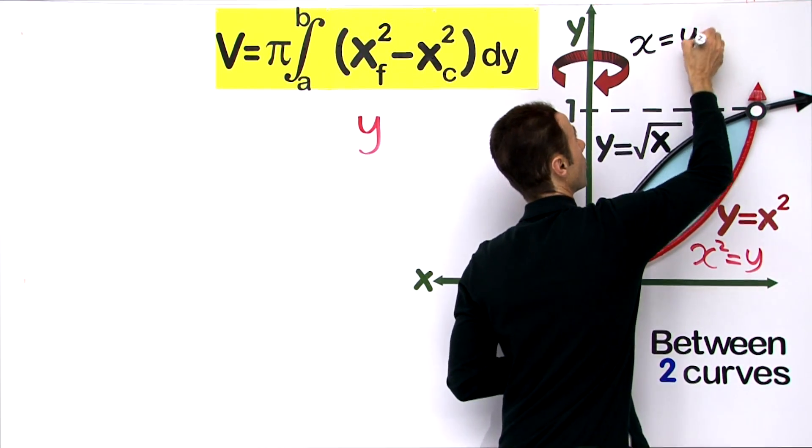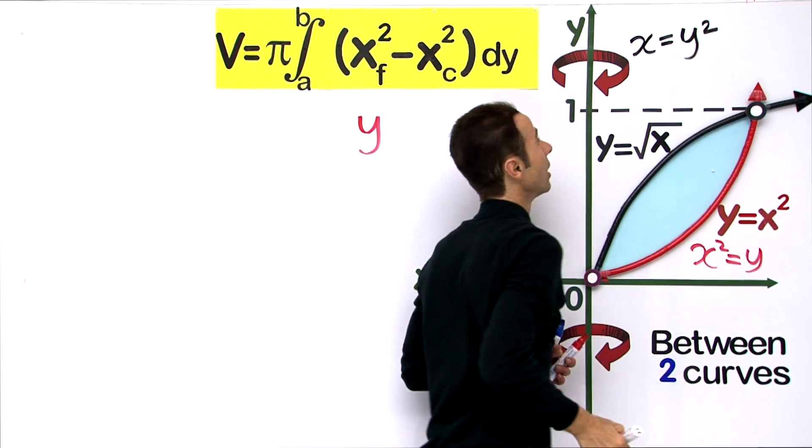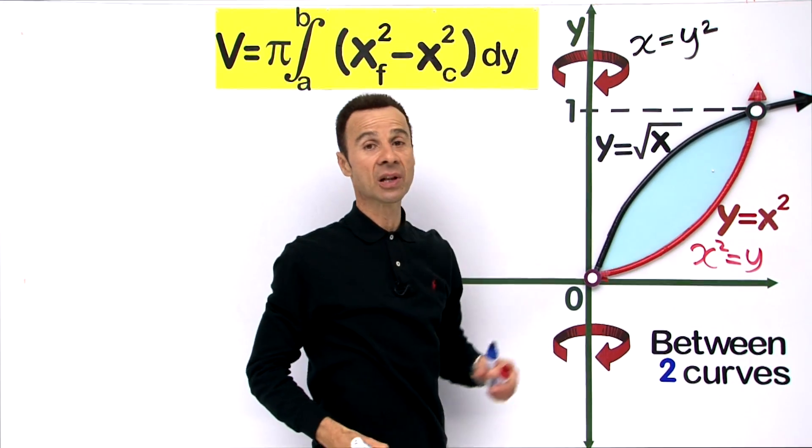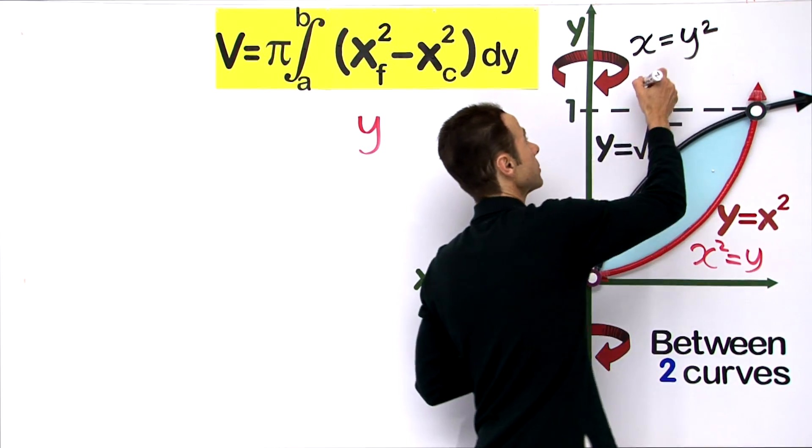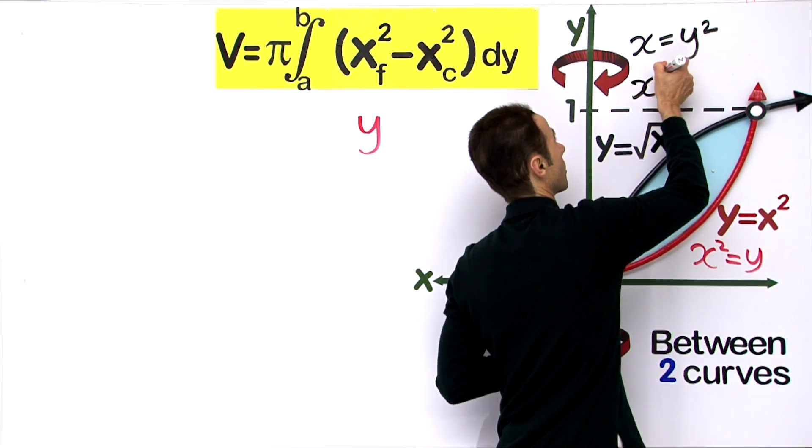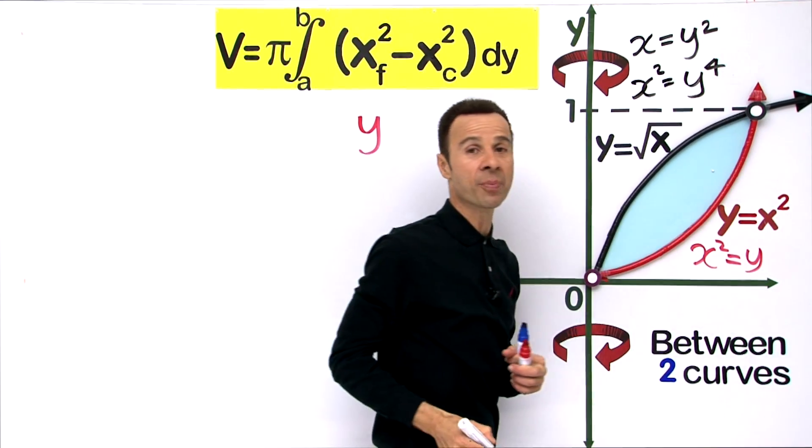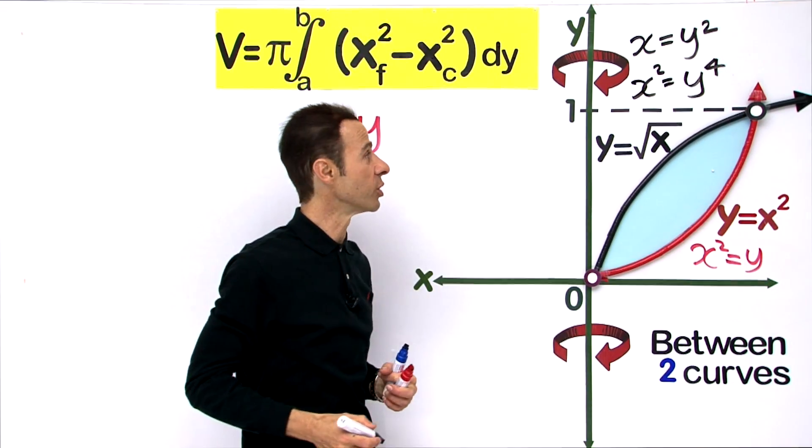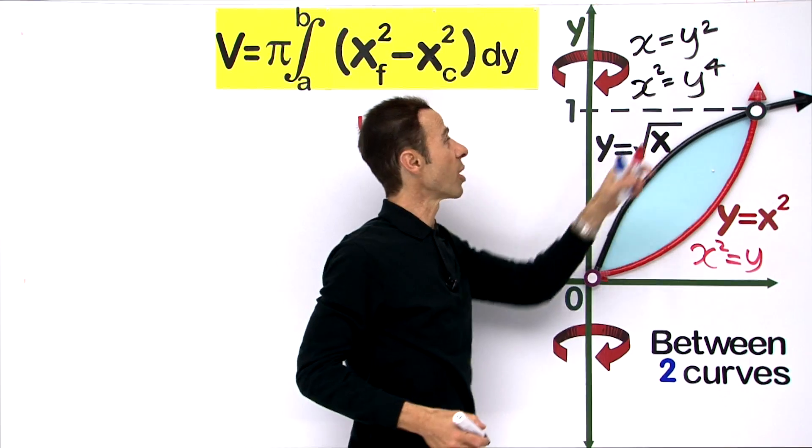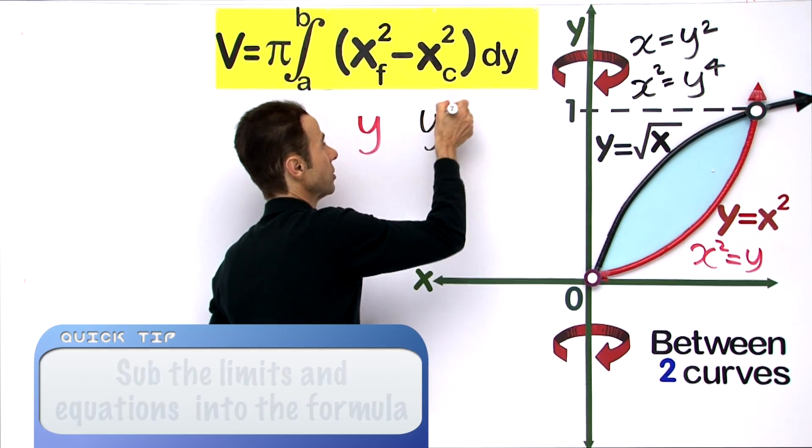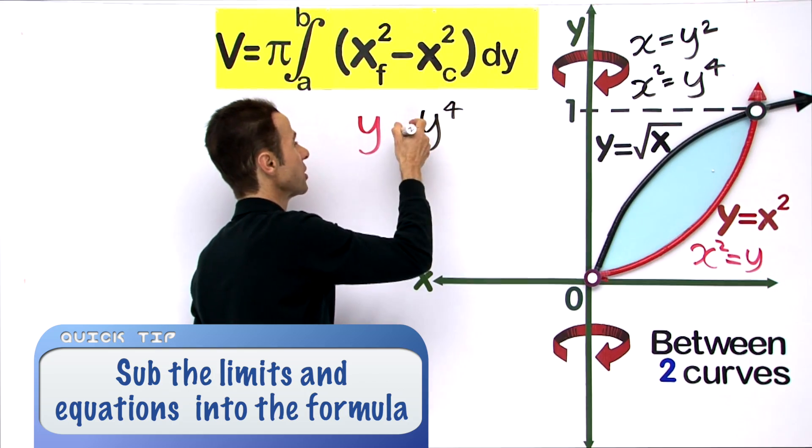Now it is not x squared yet, it is just x, so let us square it again. Y squared to the power of 2 is y to the power of 4. So x squared equals y to the power of 4 - that is the closest.